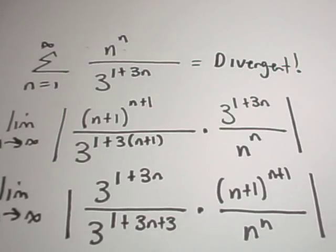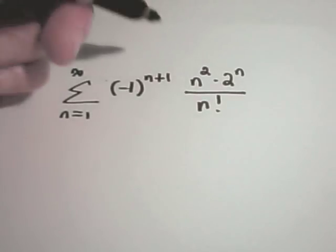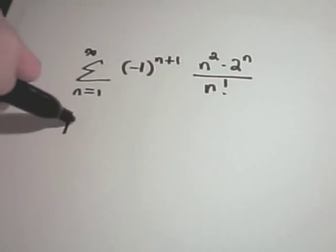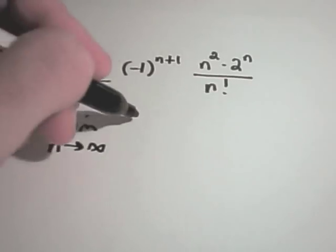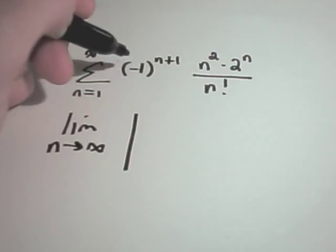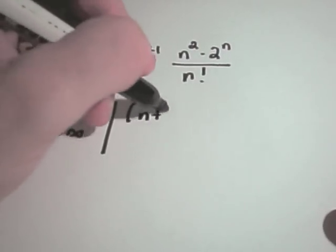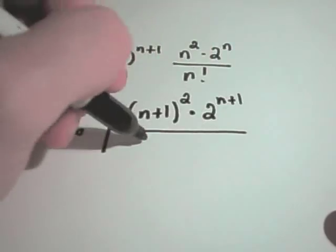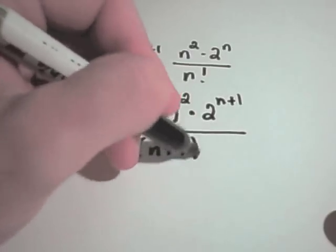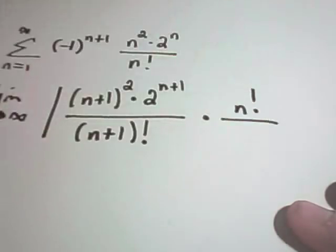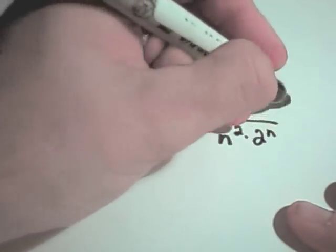Okay, let's do one more that involves factorials. So here I have negative 1 raised to the n plus 1 power, n squared times 2 to the n over n factorial. So if I look at the limit as n goes to infinity, since we're putting in an absolute value, the negative 1s are just going to go away. So I'm actually going to omit those. We'll have n plus 1 squared times 2 to the n plus 1 over n plus 1 factorial, and we're going to multiply that by n factorial over n squared times 2 to the n.